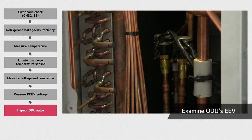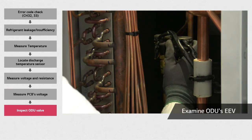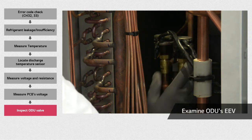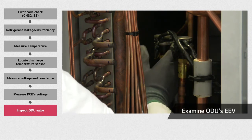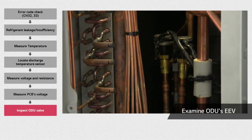Finally, check the outdoor unit electronic expansion valve (EEV). When you reset PCB power, the EEV opens and closes again. If you hold the EEV valve in your hand, you should feel it vibrating.